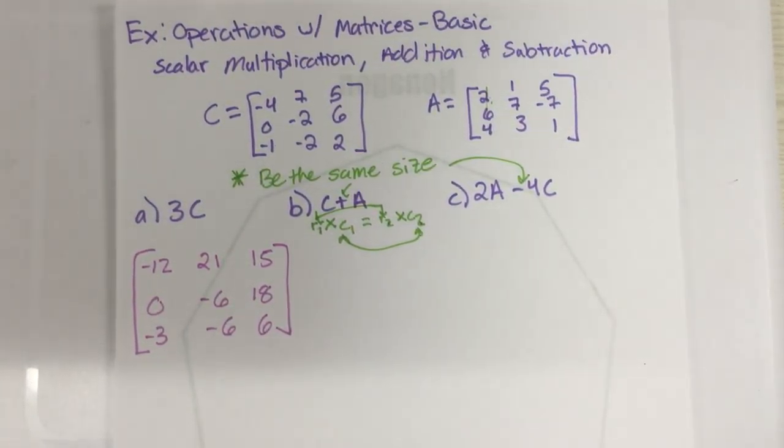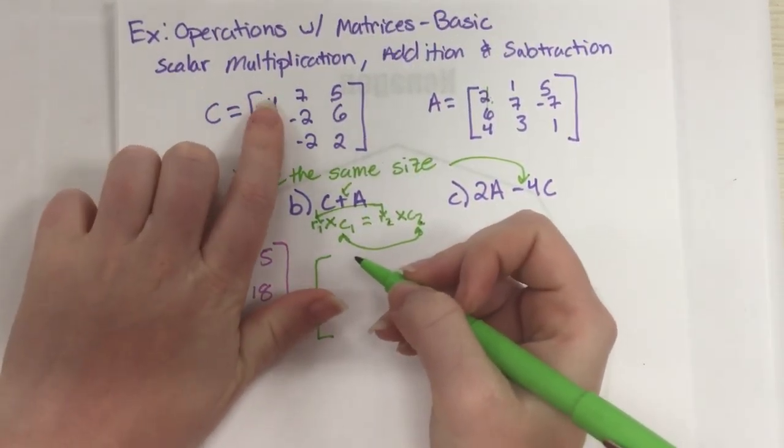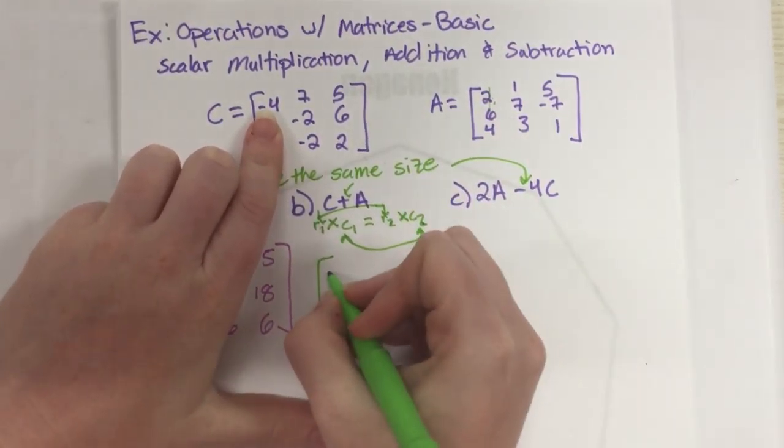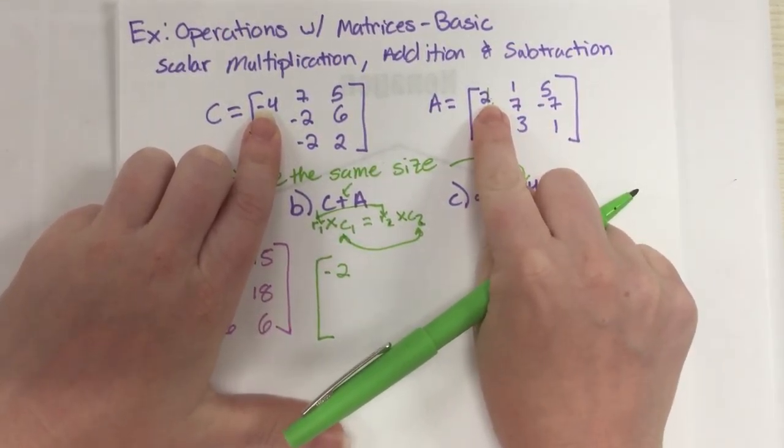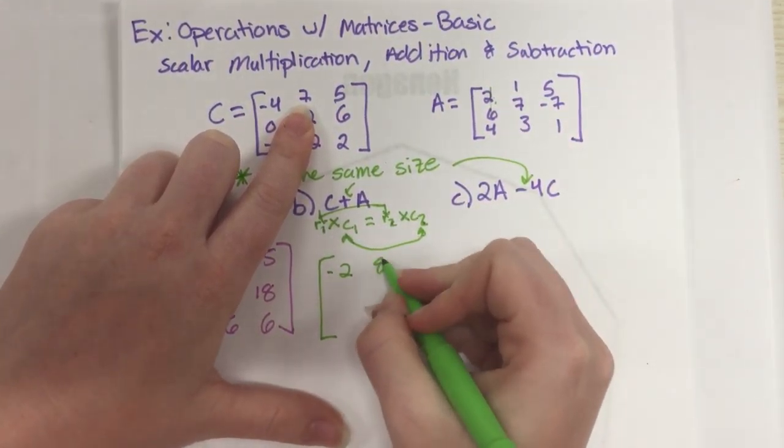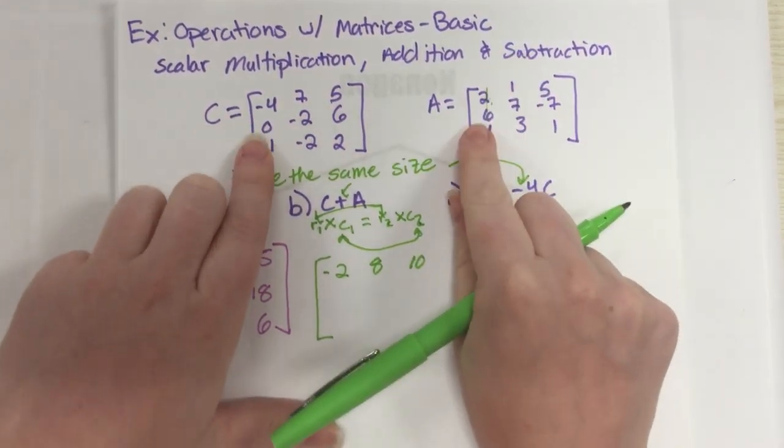And when you're going to add, you're literally going to just match the spots up. So first row, first column, I'm adding those. So what's negative 4 plus 2? Well, that's just negative 2. And then first row, second column, 7 plus 1 is 8. And then 5 plus 5 is 10. And then 6 plus, or 0 plus 6 is 6.